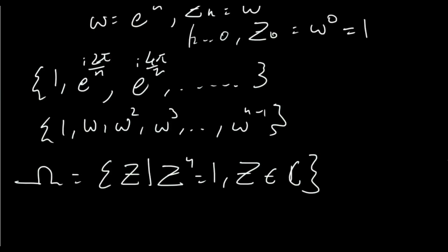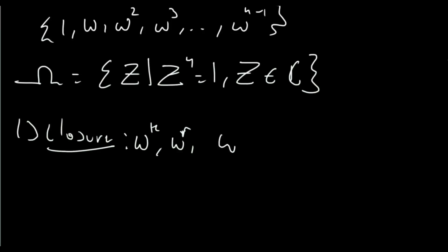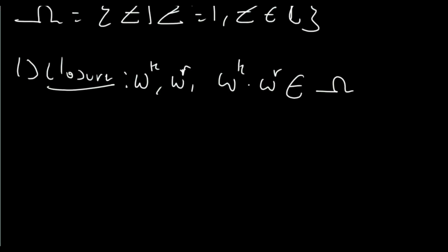If you remember back to my video explaining groups, we need to show that this set with multiplication conforms to the group axioms. Let's start with the first axiom: closure. The axiom of closure states that if we consider any two elements in the group, say omega to the k and omega to the r, then omega to the k times omega to the r should also be a member of the group for any general elements in the set. So let's consider their product: omega to the k times omega to the r.